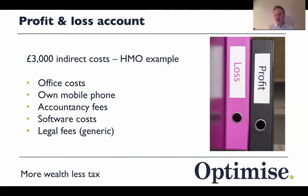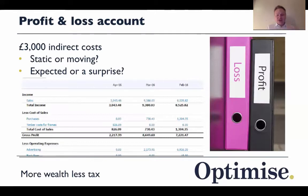Software costs will also be indirect. Legal fees that are generic — not for a specific property purchase, which is a capital cost — but for general legal advice, I believe should be indirect. By splitting costs into direct and indirect, you can track gross profit month by month: is it going up or down, are you in control, and what actions do you need to take? Same with indirect costs — is it static, is it moving, is it controllable?